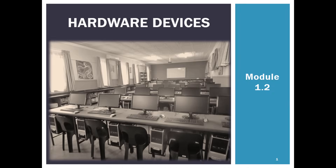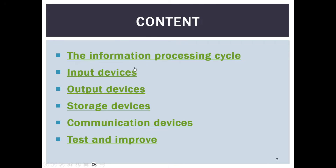Good day learners, and welcome to our next module in the Grade 12 CAT syllabus for theory. We're dealing with Module 1.2, which is hardware devices. We're going to look at hardware devices within the information processing cycle — those that deal with input, output, storage, and communication.